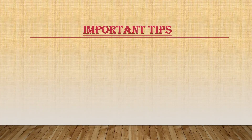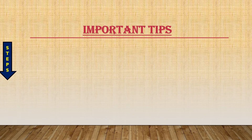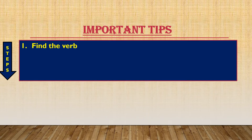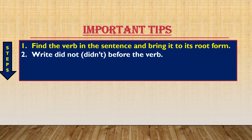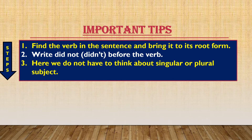Just to make this conversion process simple, I have divided it into three simple steps. Step number one: find the verb in the sentence and bring it to its root form. Step number two: write 'did not' before the root form of the verb. Here, we do not have to think about singular or plural subject — whether your subject is singular or plural, you just have to use 'did not.' By doing these three simple steps, your sentence gets changed into negative.